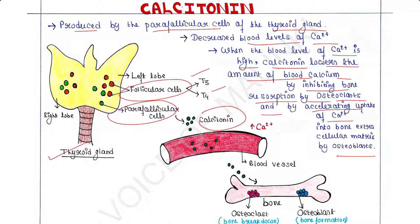There are two types of cells in our bones: osteoclasts and osteoblasts. Osteoblasts are cells responsible for bone formation, whereas osteoclasts are cells responsible for breakdown of bone. Breakdown of bone by osteoclasts is also called bone resorption. Osteoblasts form bone by absorbing calcium from blood into the extracellular matrix.